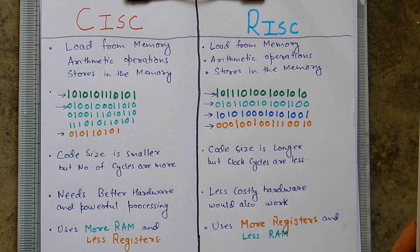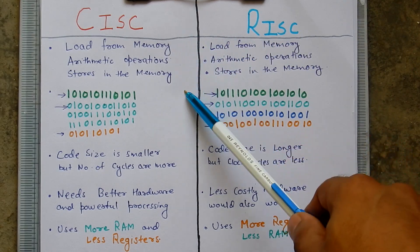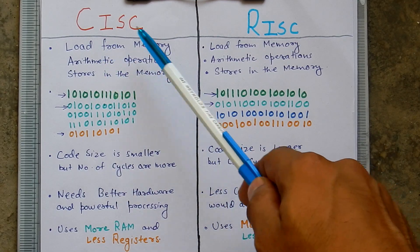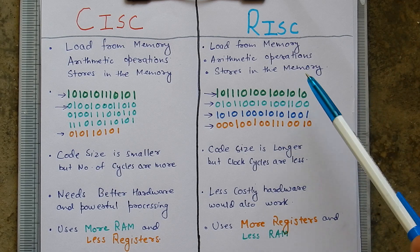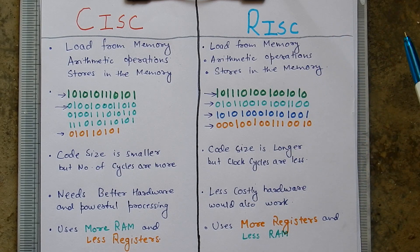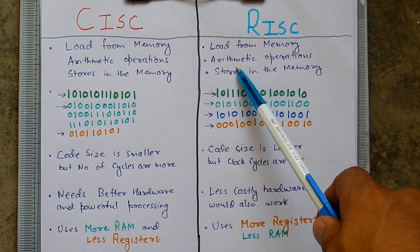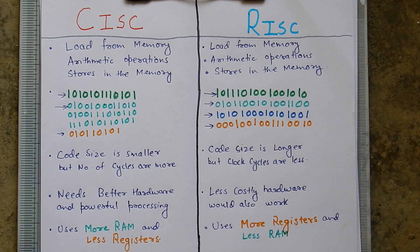Let me explain the difference between CISC and RISC on a blank page. The CISC architecture only takes one step to get the data from the memory, do operations on the data, and store the data back in the memory. In RISC architecture, the system takes three small steps: first, to load the memory; second, to do operations over the data; and third, to store the data into the memory.